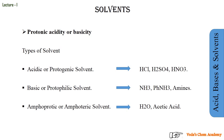The next type is the basic or protophilic solvent. Protophilic means they want to absorb the proton. Acidic means donation of a proton and basic means acceptance of the proton. An example is NH3 — the nitrogen in NH3 has a lone pair and will readily absorb a proton to convert into NH4⁺. Similarly, aniline and other amines are also capable of accepting a proton, making them examples of basic or protophilic solvents.